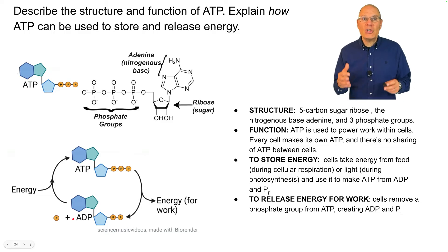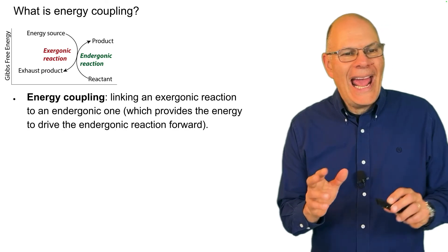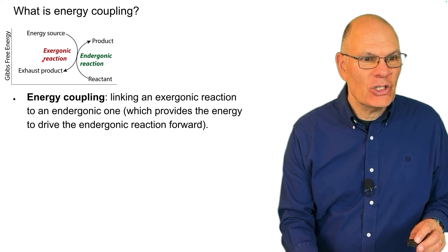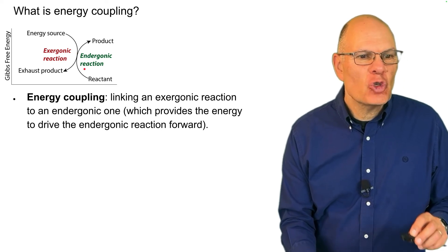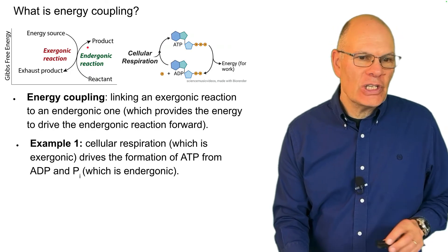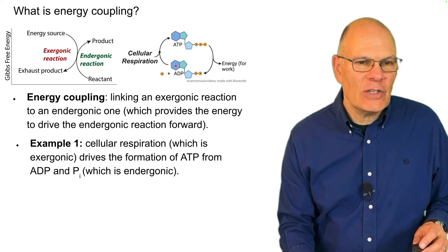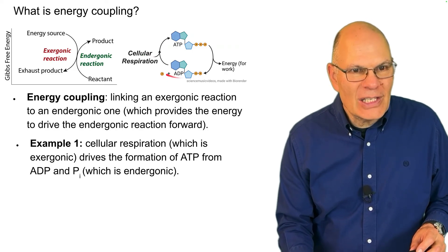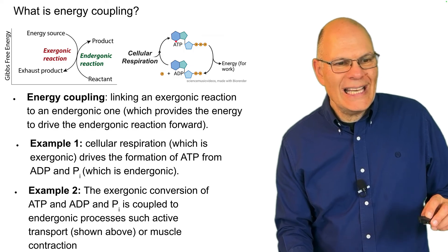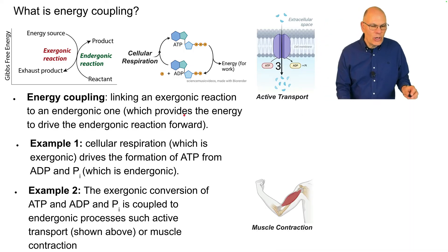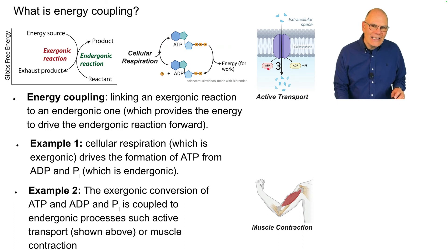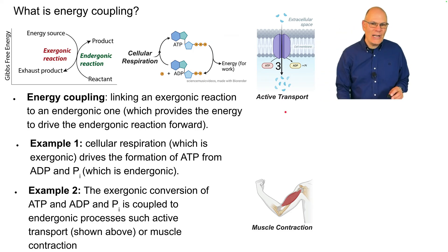To release energy for work, cells remove the terminal phosphate group from ATP, creating ADP and phosphate, which makes energy available to do cellular work. What is energy coupling? Energy coupling is the linking of an exergonic reaction to an endergonic reaction to drive the endergonic reaction forward. For example, cellular respiration (exergonic) drives the formation of ATP from ADP and phosphate (endergonic). Also, the exergonic conversion of ATP to ADP and phosphate is coupled to endergonic processes such as active transport and muscle contraction.